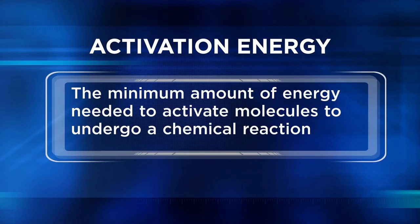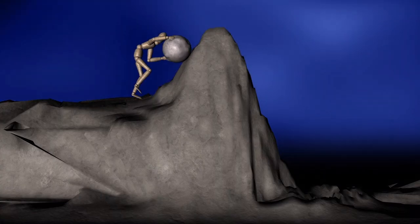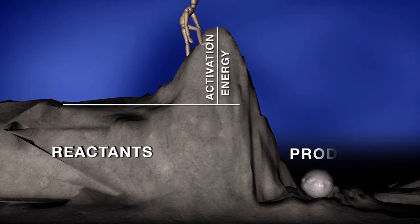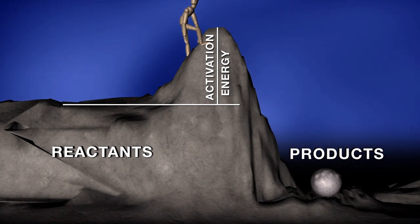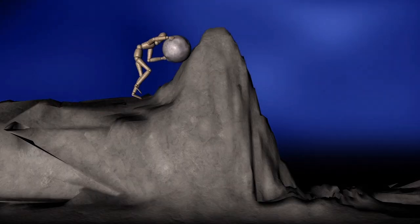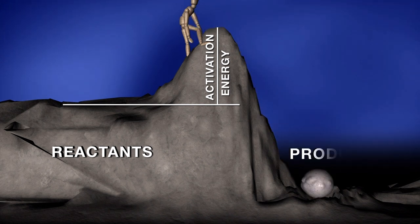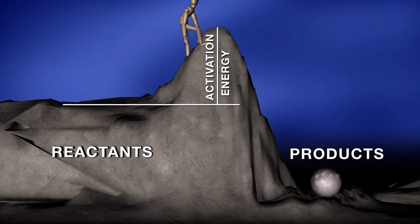The ratio of products to reactants at equilibrium depends in part on the ratio of the activation energies for the forward and reverse reactions. Activation energy refers to the minimum amount of energy needed to activate molecules to undergo a chemical reaction. The higher the activation energy needed, the slower the reaction will go; the lower the activation energy, the faster the reaction will go. If the hill representing activation energy is small — meaning only a little energy is needed — we can expect more products than reactants at equilibrium.